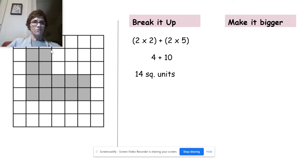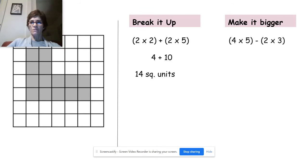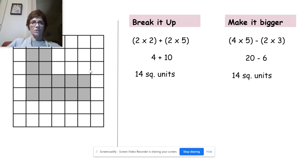Or we can make it bigger. We pretend that we have a 4 by 5 rectangle — make it bigger — 4 times 5, and then we have to take away this part here: 2 times 3, which is 6. 20 minus 6 is 14 square units.